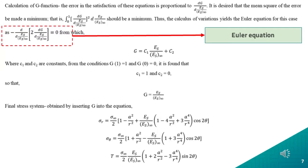In the previous slide, the equilibrium equation of plane stress, we shall consider the error of that particular equation and shall be made as minimum as possible. Thus, the calculation of variation yields to the Euler equation for this case, where c1 and c2 are constants. From the condition g equals to 1 and g equals to 0, it is found that c1 equals to 1 and c2 equals to 0. Therefore, the final stress system obtained by inserting g into the equation gives us the equation at the bottom of the slide.